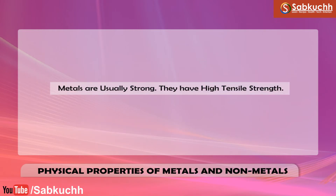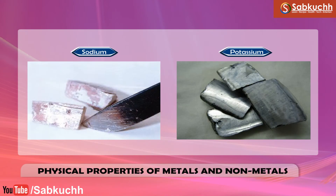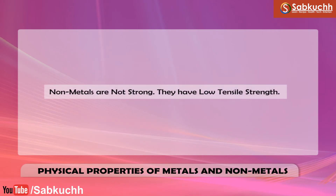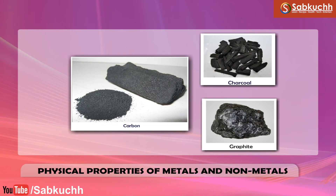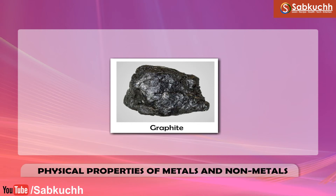Strength. Metals are usually strong and have high tensile strength, which means that metals can hold large weights without breaking. For example, iron metal in the form of steel is very strong, having a high tensile strength. Sodium and potassium are exceptional metals that are not strong. Non-metals are not strong; they have low tensile strength, which means that non-metals cannot hold large weights and break easily. For example, graphite is a non-metal which is not strong.